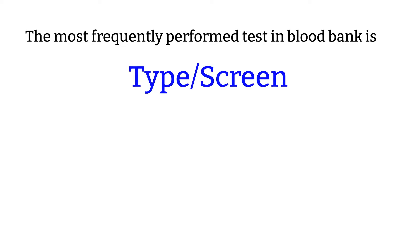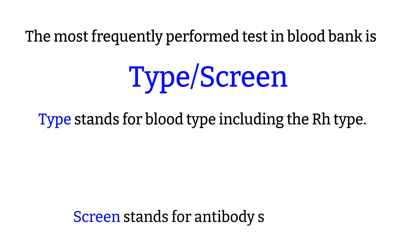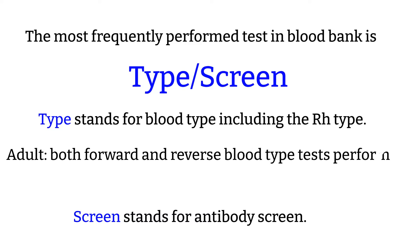In general, a combo test most performed in blood bank is called type and screen, which actually stands for blood type and antibody screen. The blood type part of the name refers to determining the patient's blood type: A, B, O, or AB. And do not forget to determine the patient's Rh status — this is part of the blood typing process. For adult patients, we perform both forward and reverse blood type, and the forward and reverse have to agree before we can assign a patient's blood type. I have a detailed video on how to perform both forward and reverse and how to deal with discrepancy, so please check them out.